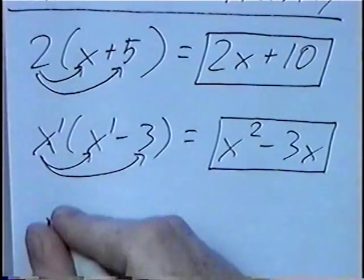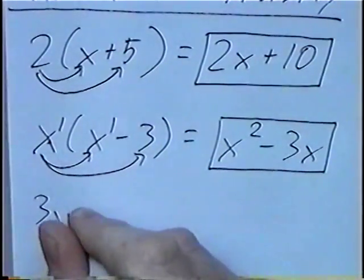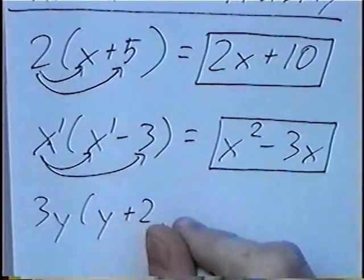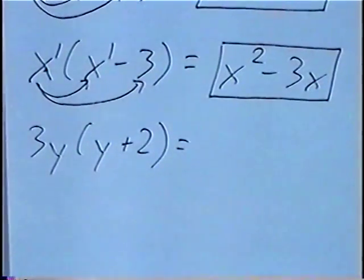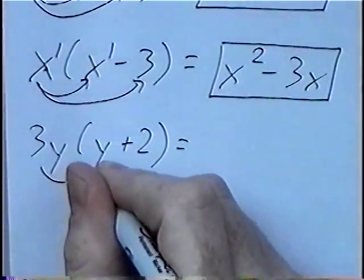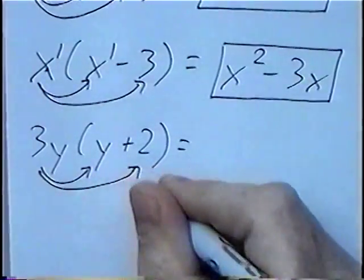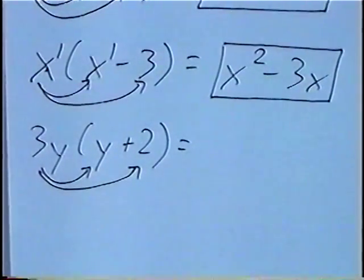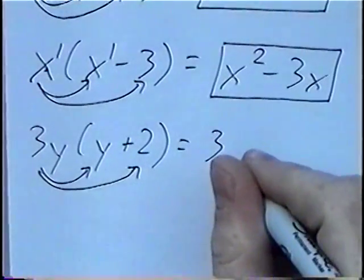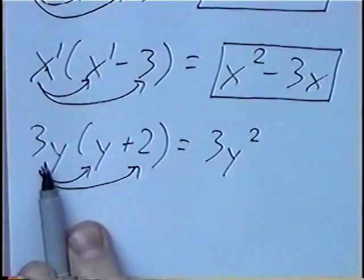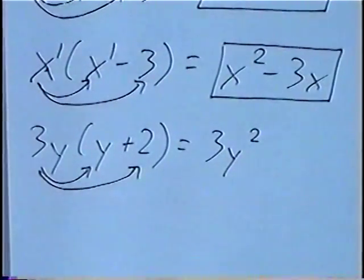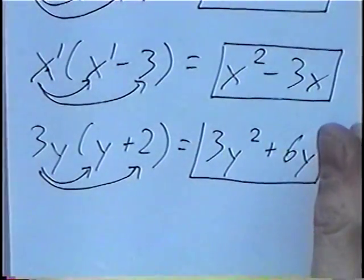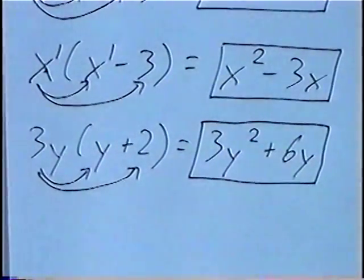Last question for the section: 3y and inside parenthesis y plus 2. Again, multiplying the term outside by each term inside the parenthesis. 3y times y would be 3y squared, and 3y times a positive 2 would be positive 6y. So our final answer is 3y squared plus 6y.